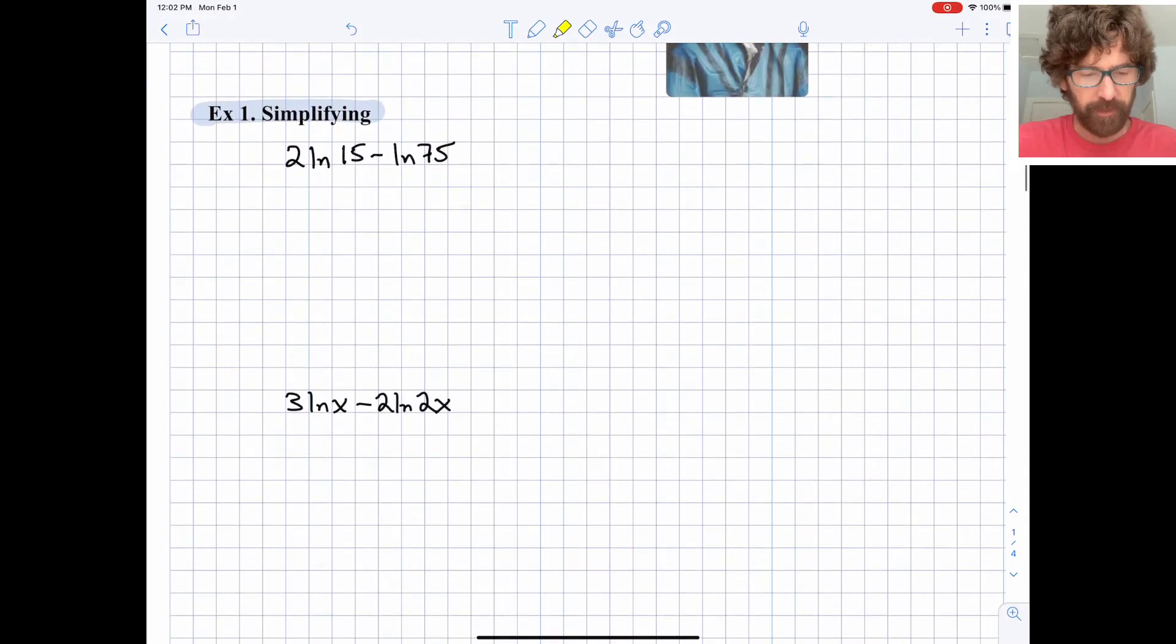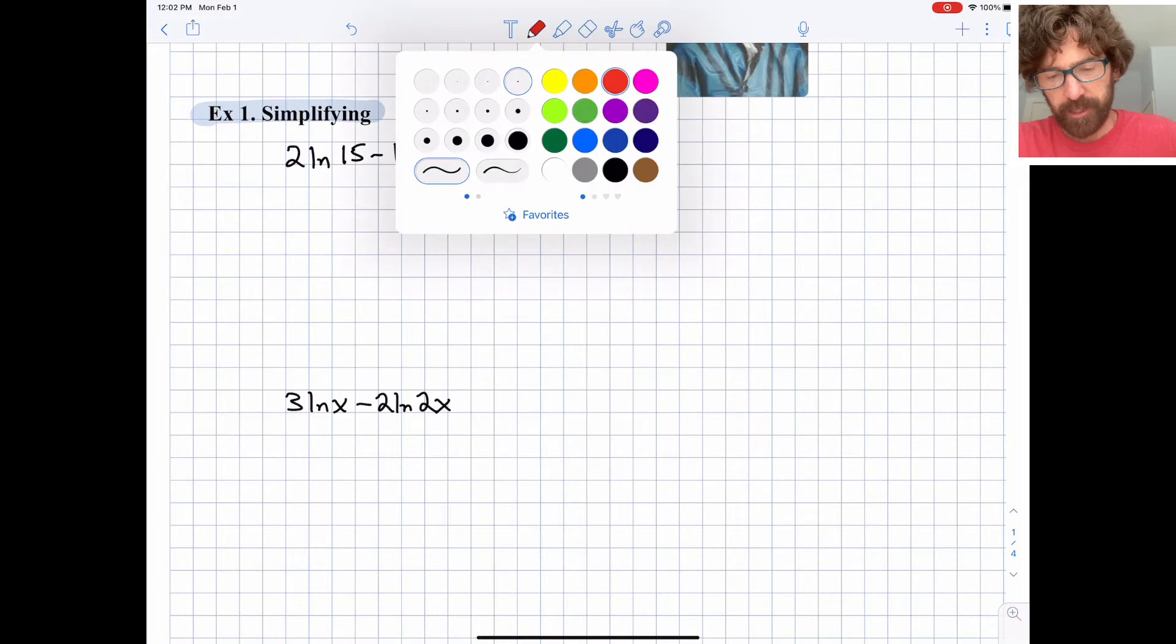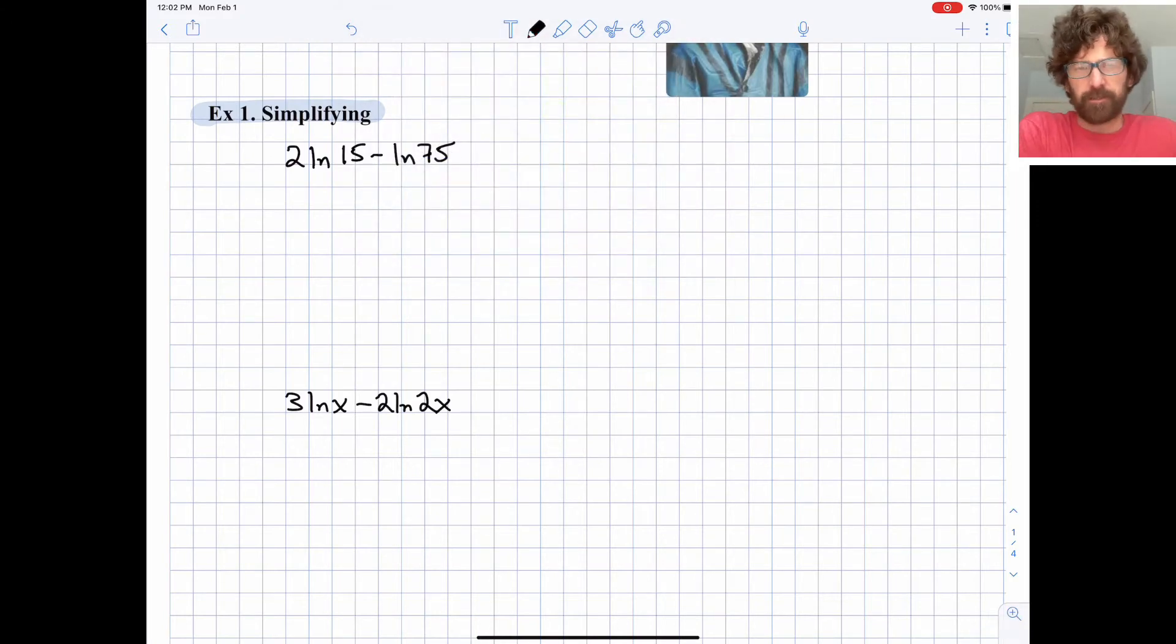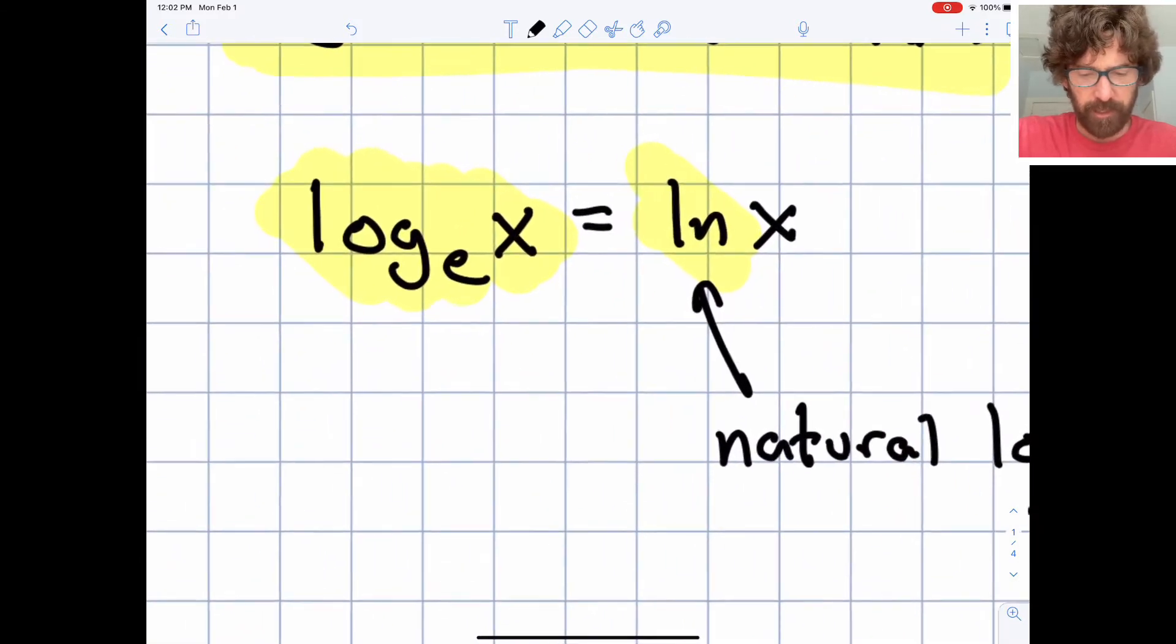So we'll do a little bit of work with simplifying. The first one is 2 times the natural log of 15 minus the natural log of 75.